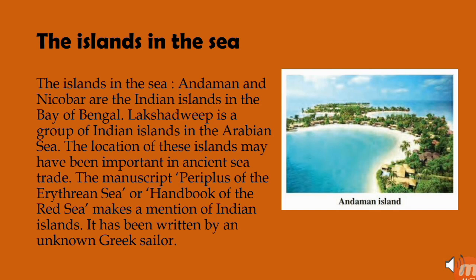The islands in the sea: the Andaman and Nicobar islands are the Indian islands in the Bay of Bengal; Lakshadweep is a group of Indian islands in the Arabian Sea. The location of these islands may have been important in ancient sea trade. The manuscript Periplus of the Erythraean Sea, a handbook of the Red Sea written by an unknown Greek sailor, makes mention of Indian islands. There are two main types of islands in the sea: continental and oceanic.